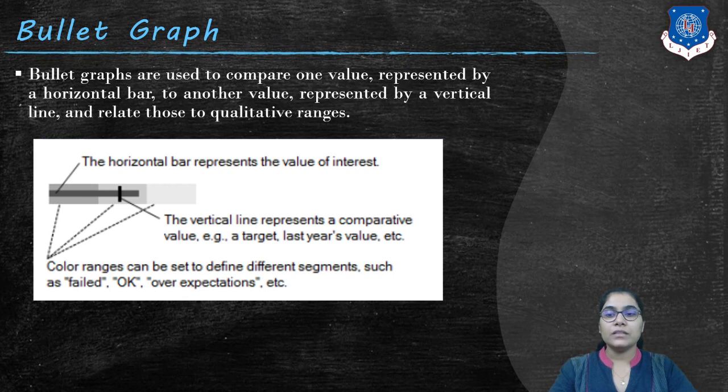Now there are different colors that you can see in a bullet graph. These color ranges can be set to define different segments such as fail, ok, over expectation, etc. In terms of sales or performance we can categorize these ranges of color as poor, average, or excellent.